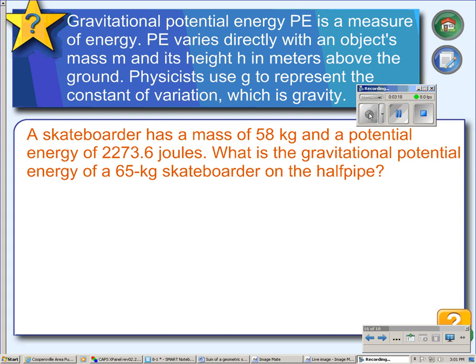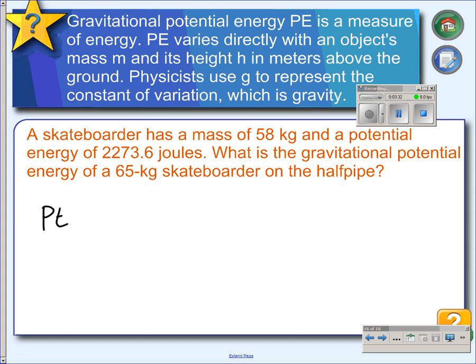Here's another example from the world of physics. Gravitational potential energy PE is a measure of energy. Potential energy varies directly with an object's mass, so PE varies directly with mass. Mass gets multiplied by the constant term, and its height in meters above the ground, mass and height. These are both directly.